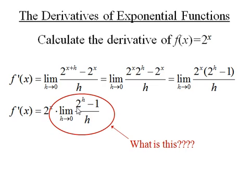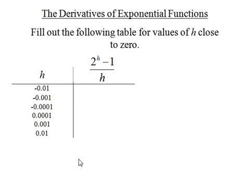Well, if we plug in 0, we get 2 to the 0, which is 1, minus 1, which is 0 over 0. So we have an indeterminate form. So that limit may exist. So we can evaluate it with a table. So let's see what happens as it gets really close to 0.